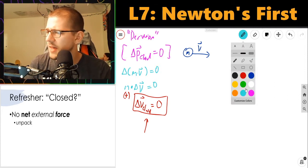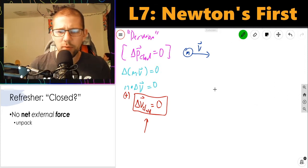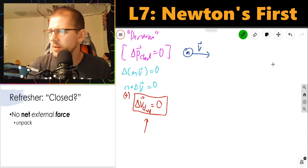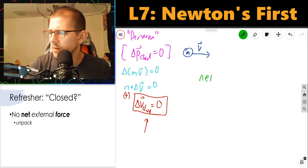Closed means that the sum of the forces acting on my system sum to zero. Net means sum.